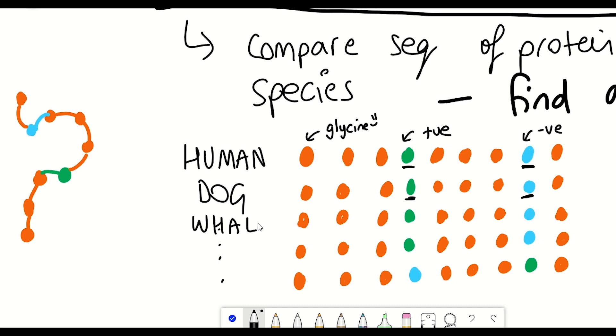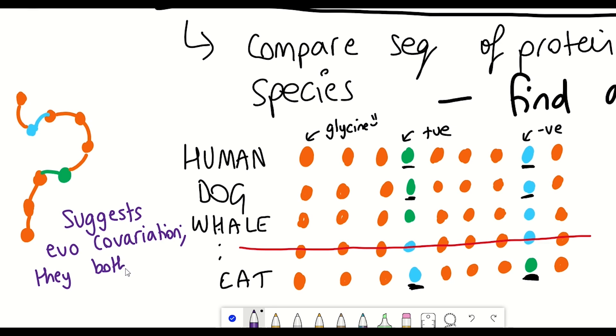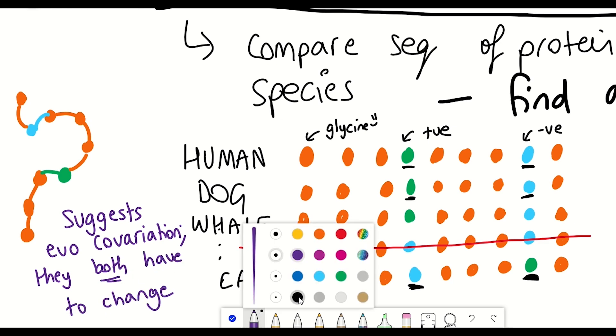But if we look at the cat, the cat actually has them switched around. It's got the negatively charged amino acid first and the positively charged one second. And what you might notice as well is that we don't seem to have any species that have two positive amino acids in either of those positions or two negative amino acids in either of those positions, suggesting that those two residues show evolutionary co-variation. If one of them changes, the other one has to change to maintain an interaction between those two positions in the final 3D structure.